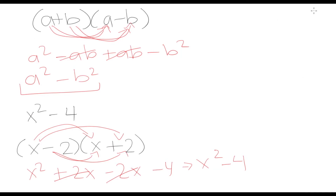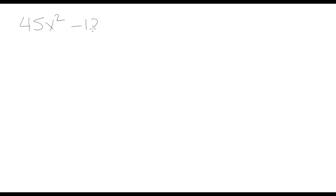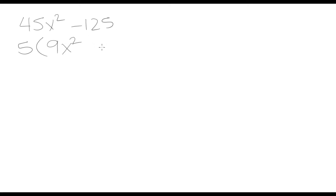Let's go over one more example of a difference of two squares: 45x squared minus 125. When you look at this, you might recognize that these by themselves are not perfect squares — 45 is not a perfect square and neither is 125. But each of these terms has a common factor of 5. So if we factor out 5, we're left with 5 times the quantity 9x squared minus 25.